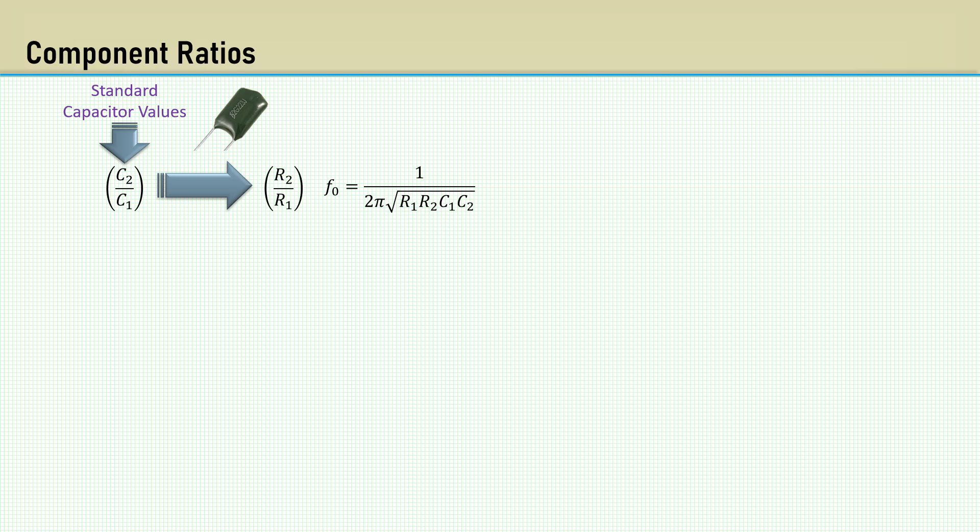These ratios will be dependent on the damping ratio zeta. Recall the equation for the damping ratio from the Salen-Key analysis video. It will take a considerable amount of algebraic manipulation to rearrange this equation to input and output our desired ratios. So here we go. Choosing not to work with the radical, we square both sides. Pull C2 over C1 out as its own ratio, then expanding the numerator.